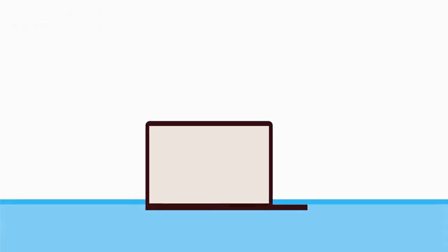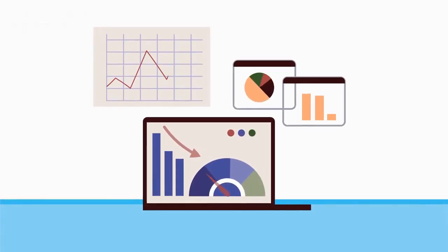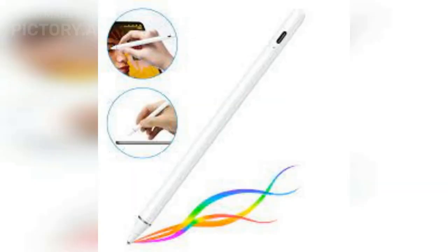Bootstrap is one of the most popular CSS frameworks available. It is a mobile-first framework that includes a responsive grid system, typography, forms, buttons, navigation, and other UI components. It also includes pre-designed templates and themes.